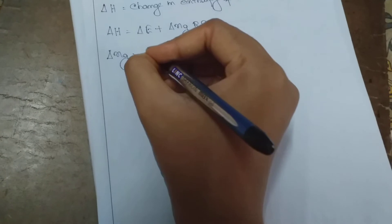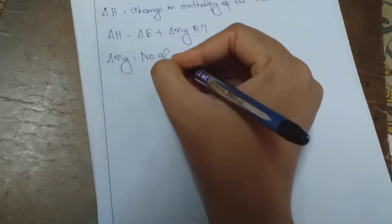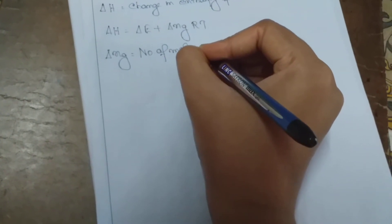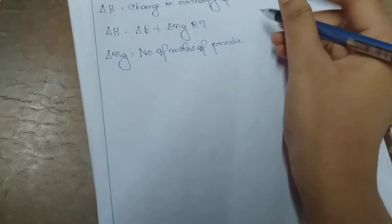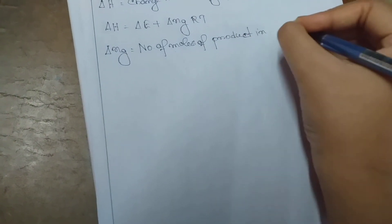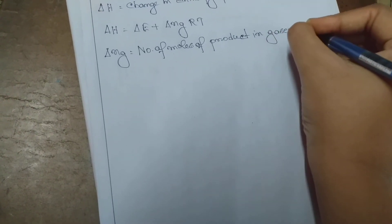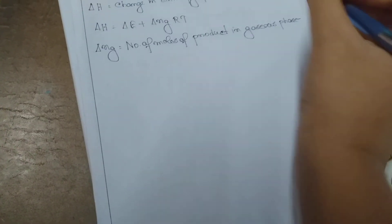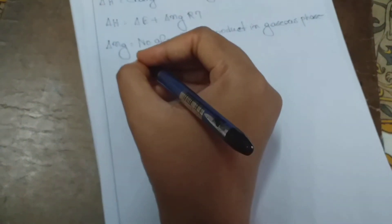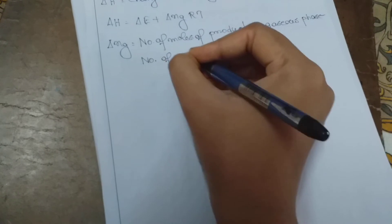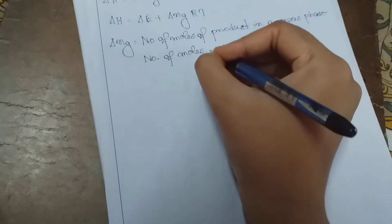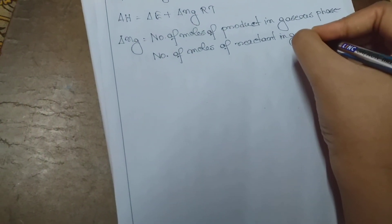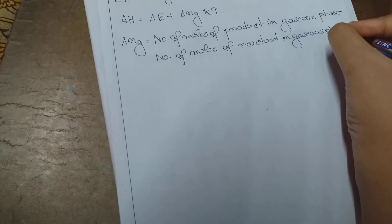Delta Ng (N subscript g) is equal to the number of moles of product in gaseous phase minus the number of moles of reactant in gaseous phase.